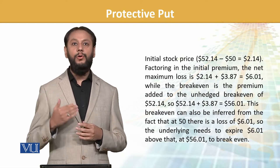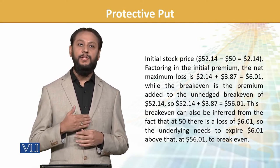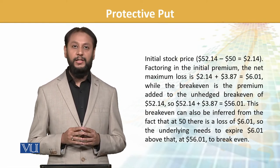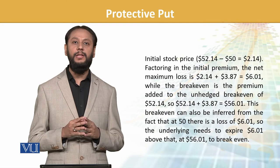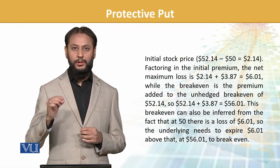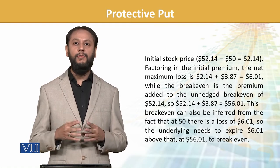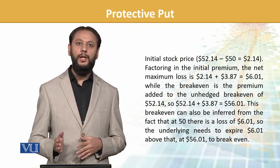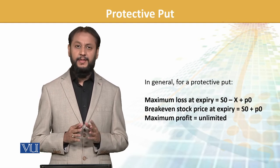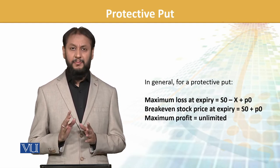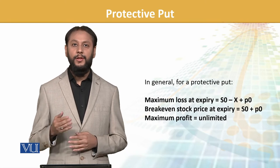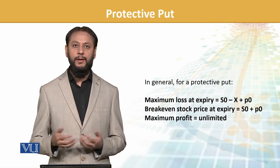If the price reaches 56, we cover the cost - that will be our break-even level. Step by step you will have a better understanding. The maximum loss at expiry is the spot minus the strike price plus the premium you are paying - that sum is the maximum loss.